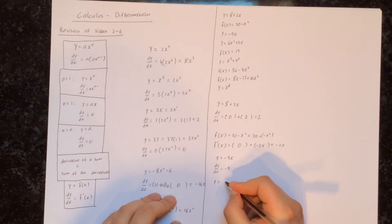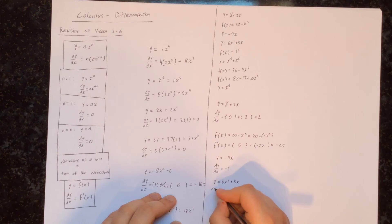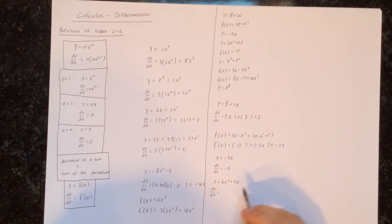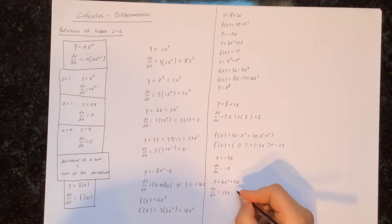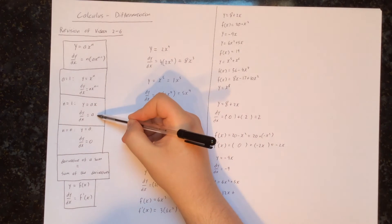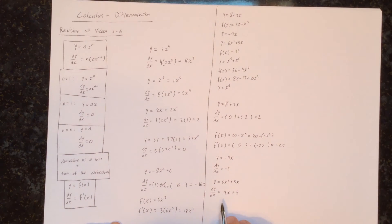Next, y equals 6x squared plus 5x. We've got two things added together, so we find the derivative of each and add them. The derivative of 6x squared: multiply by the power 2, giving 6 times 2 equals 12, and reduce the power of x by 1 to get 12x. The derivative of 5x is just 5. So the derivative of the whole thing is 12x plus 5.